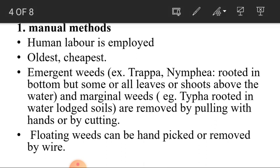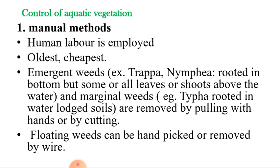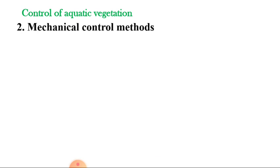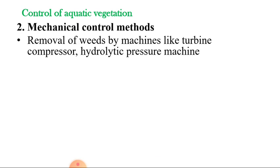The second type is the mechanical control method — removal of weeds by machines. Mechanical removal of aquatic weeds by machines is the most satisfactory method. During recent years, power lifts or diesel-operated machines have been applied for eradicating dense rooted aquatic vegetation. Machines like turbine compressors and hydraulic pressure machines are used.